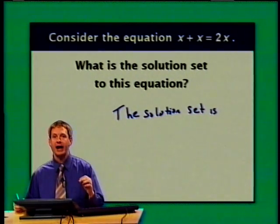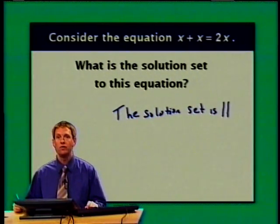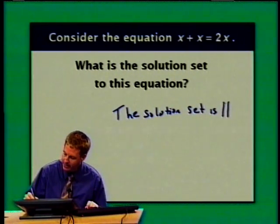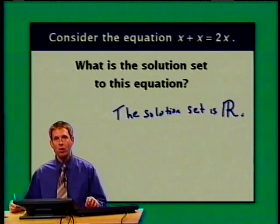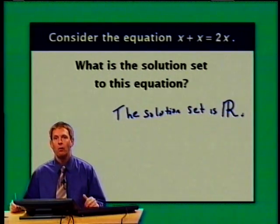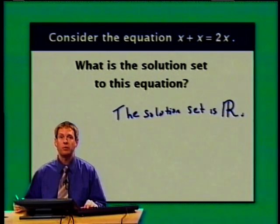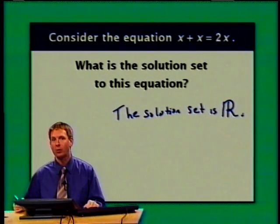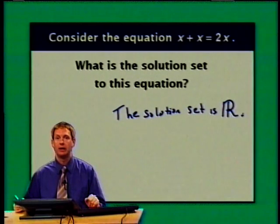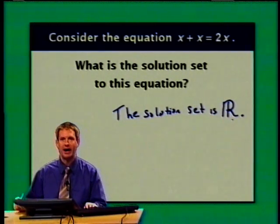The way we freehand write the symbol for the set of all real numbers is to start with two vertical bars and make a scripty-looking R from them. In books and printed material, you'll sometimes see a capital R in really bold font. So if you see a bold capital R, think 'the set of all real numbers.' The solution set to x plus x equals 2x is the set of all real numbers.